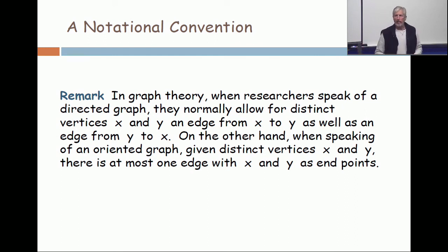In an oriented graph, between two vertices, you have at most one edge. So when we're talking about comparability graphs, we want to talk about oriented graphs, not digraphs. We're going to put directions on edges, but we'll never have an edge over and an edge back.